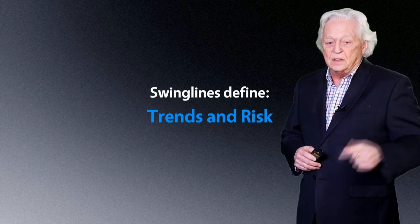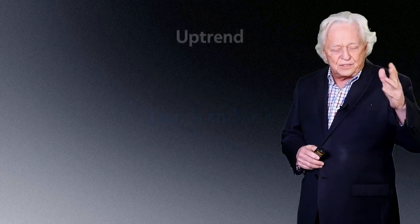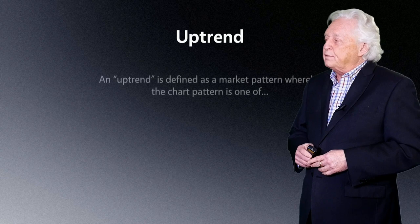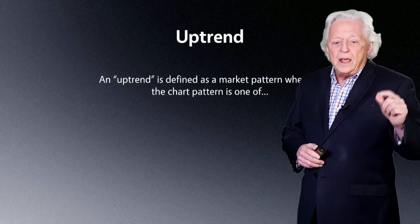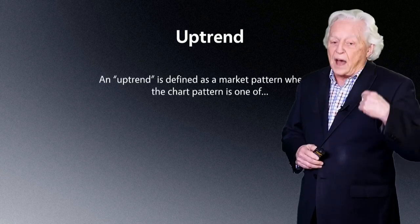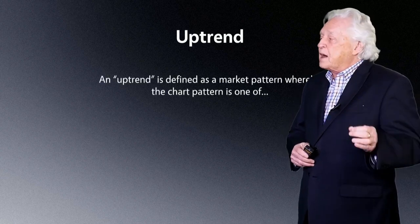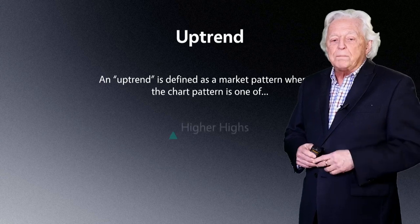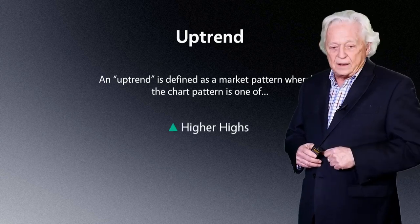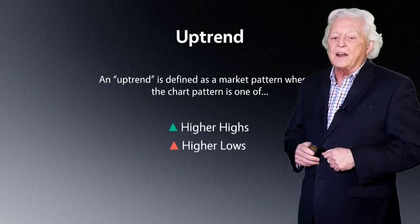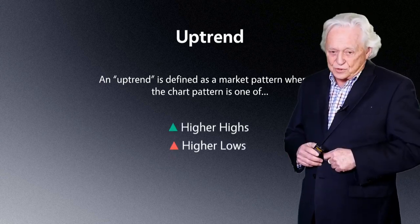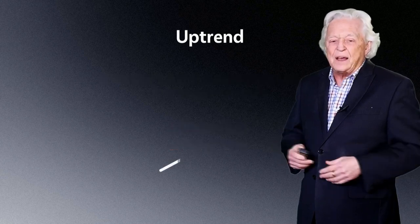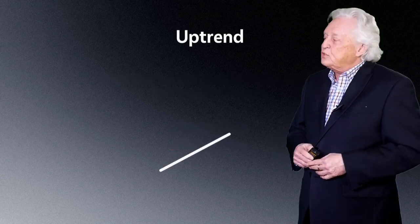Now you're going to say, what does that all mean? Well, let's start with an uptrend first. An uptrend, as I define it, is a market pattern whereby the chart pattern is one of higher highs and higher lows. You see that — but how do you see that on a chart?